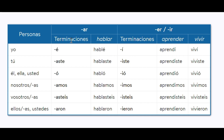So the preterite, or pretérito indefinido — we have for each column the terminaciones, which means endings, and also the verb that is in infinitive. What does it mean to be in infinitive? That is the base form of the verb, meaning it's not conjugated to any subject pronouns.